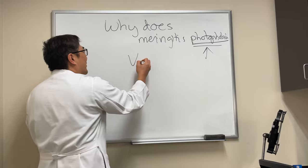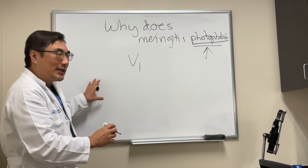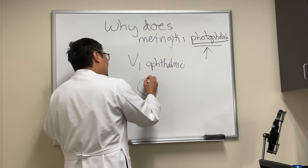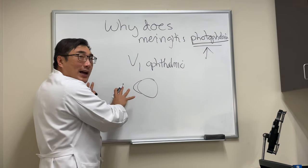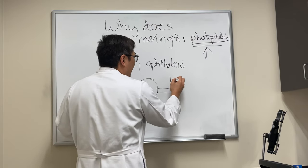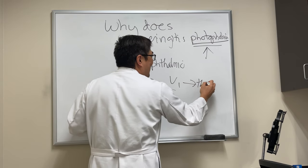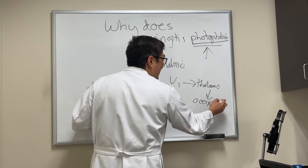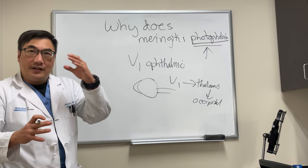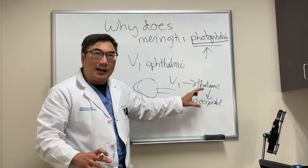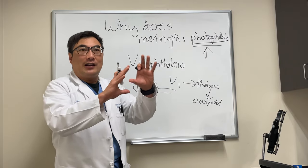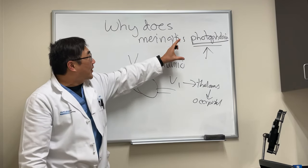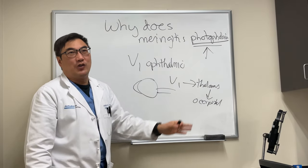The trigeminal nerve's first division is called the ophthalmic division. This trigeminal is taking information from the eye — V1 — to the thalamus, and amazingly, to the occipital cortex. There's input from a trigeminal-thalamic-occipital pathway that is part of a larger neural network, meaning a whole bunch of other things, not just meningitis, can cause photophobia.